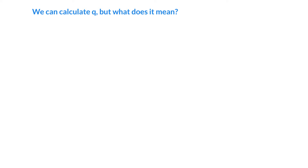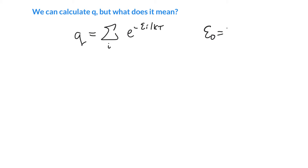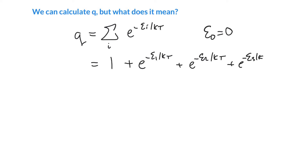So we can calculate Q — but what does it mean? There is a really nice physical meaning. Q is the sum over all states of e to the minus e_i over kT, and it's a normalization function — it ensures when you add up the probabilities of all different states, they sum to unity. By setting the lowest energy state to zero, the first term in our sum is e to the minus zero, which equals one. So Q equals one plus e to the minus (energy of first state over kT) plus e to the minus (energy of second state) and so on — an infinite sum over all possible states of the molecule.